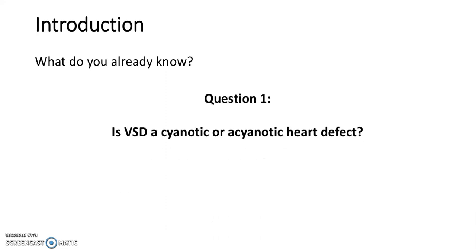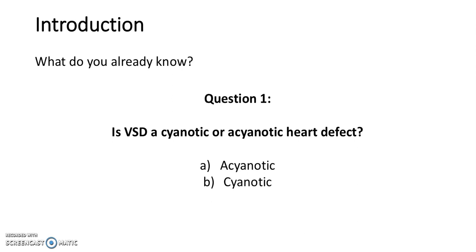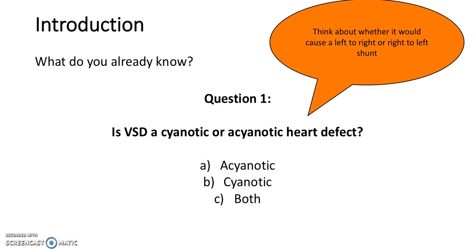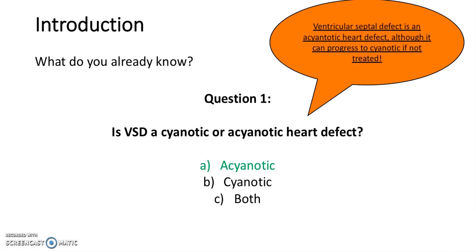Question 1. Is a VSD a cyanotic or an acyanotic heart defect? A. Acyanotic. B. Cyanotic. C. Both. Think about whether it would cause a left-to-right or a right-to-left shunt. The answer is A, acyanotic. A ventricular septal defect is an acyanotic heart defect, although it can progress to a cyanotic if not treated.